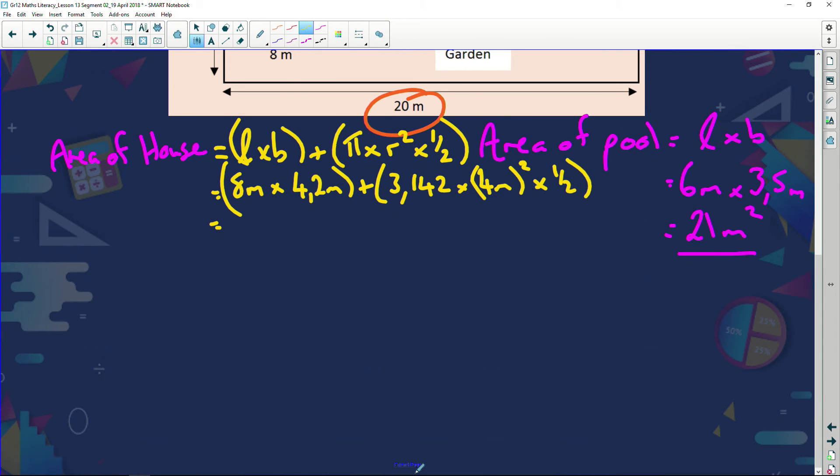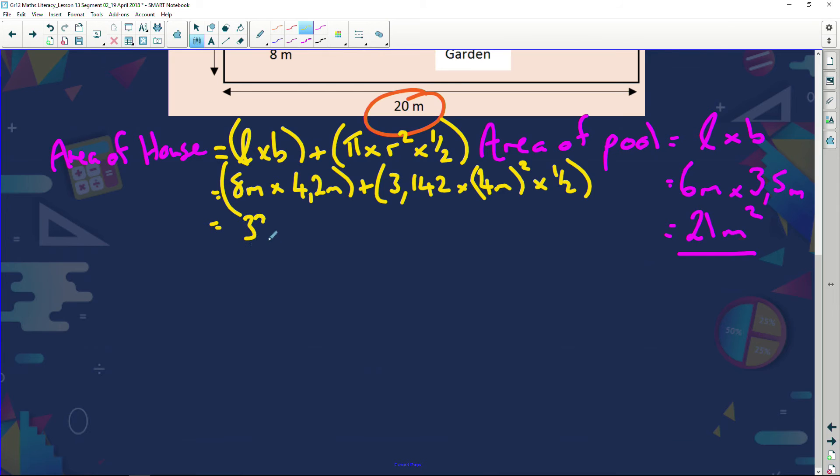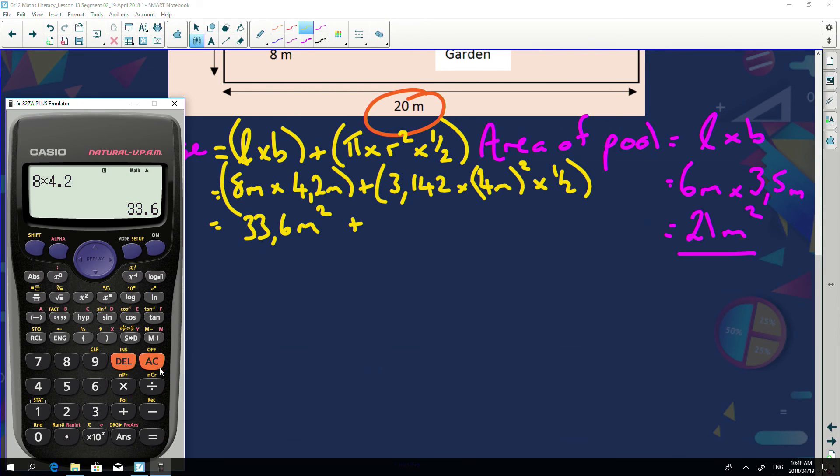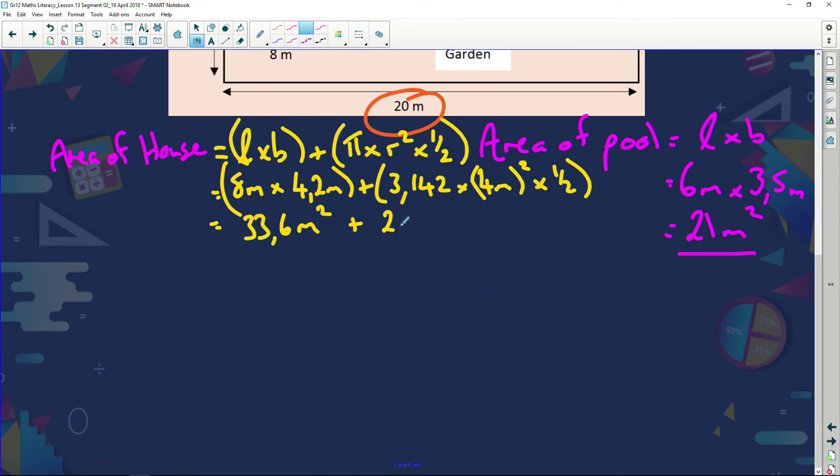We're going to go write 8 multiplied by 4.2 and I get an answer of 33.6. So 33.6 meters squared. Plus. And we do the next part. 3.142 multiplied by 4 squared multiplied by a half. Why? I got half a circle. And I'll end up with 25.136. 25.136 meters squared.